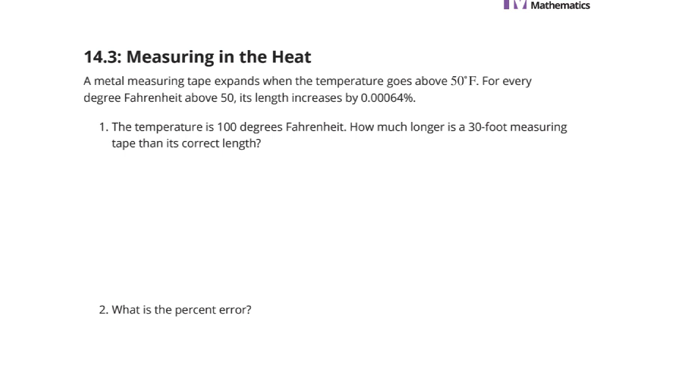Now, if the temperature is 100 degrees Fahrenheit, how much longer is a 30-foot measuring tape than its correct length? And then calculate, what is the percent error? So, perhaps the first thing we need to look at is how many degrees above 50 are we? Well, if we take 100 and subtract the 50 degrees, we are 50 degrees above 50. All right.